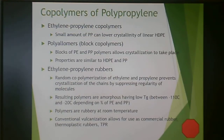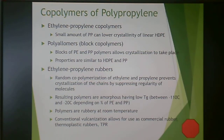There are a wide variety of copolymers for polypropylene. Ethylene-propylene copolymers are the biggest category. Small amounts of propylene can reduce crystallinity of linear high-density polyethylene, so a little bit of polypropylene gives you something with linear chains but reduced crystallinity. They also make polyallomers, or block copolymers — blocks of polyethylene and then blocks of polypropylene.